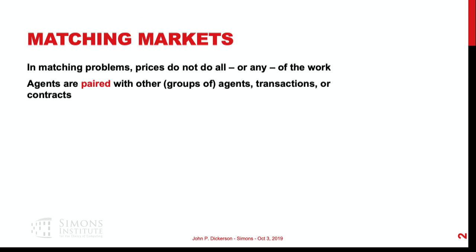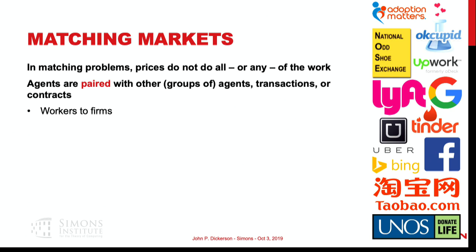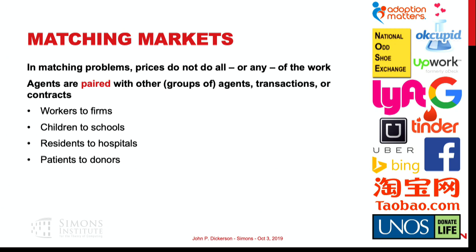We'll have agents paired with other agents or potentially groups of agents. Examples of matching markets include matching workers to firms, children to schools, residents to hospitals, patients to donors — which we won't be talking about today — and matching advertisements to viewers, which is how a lot of us get our new fancy computer science buildings. And finally, matching riders to rideshare drivers, which the Ubers and Lyfts of the world do a really interesting job of.